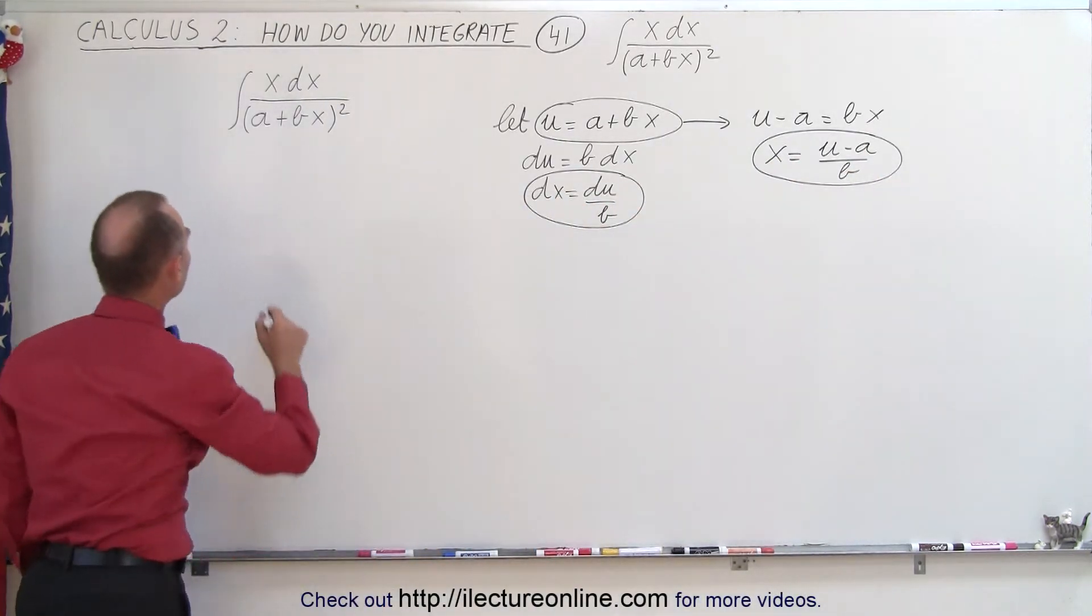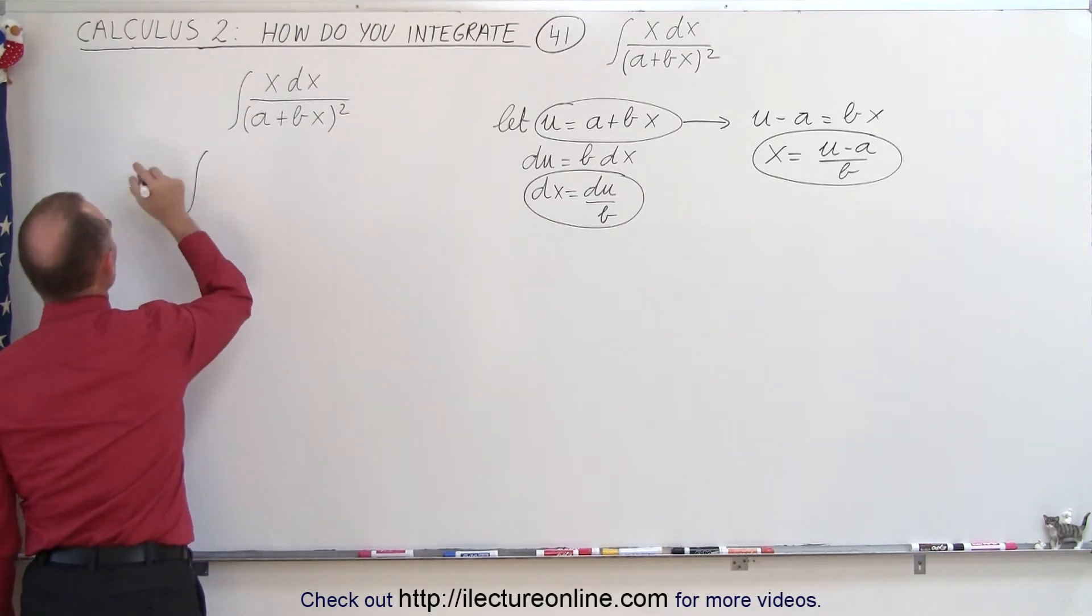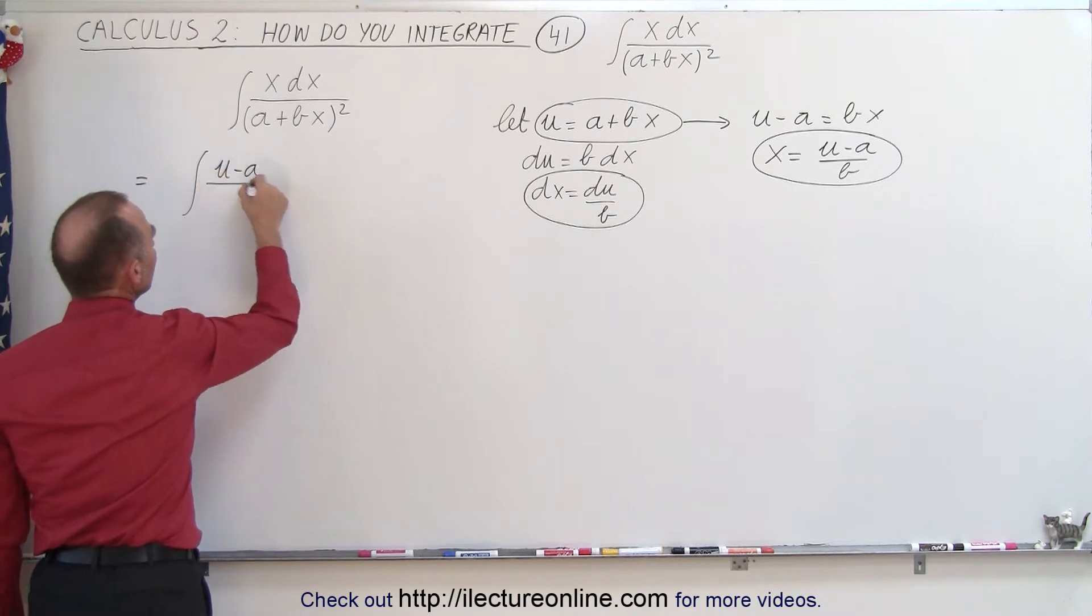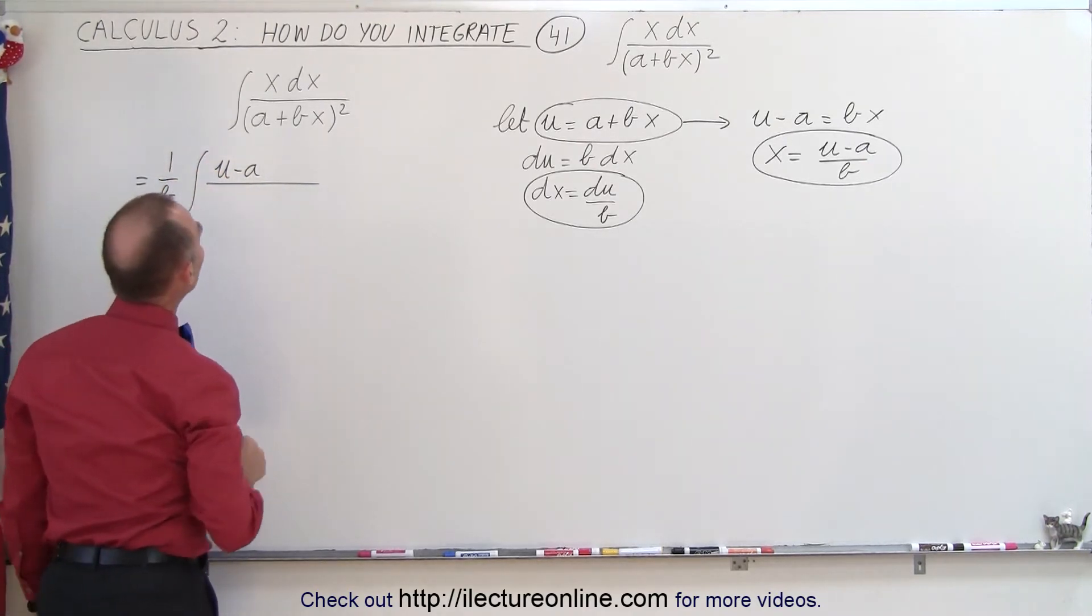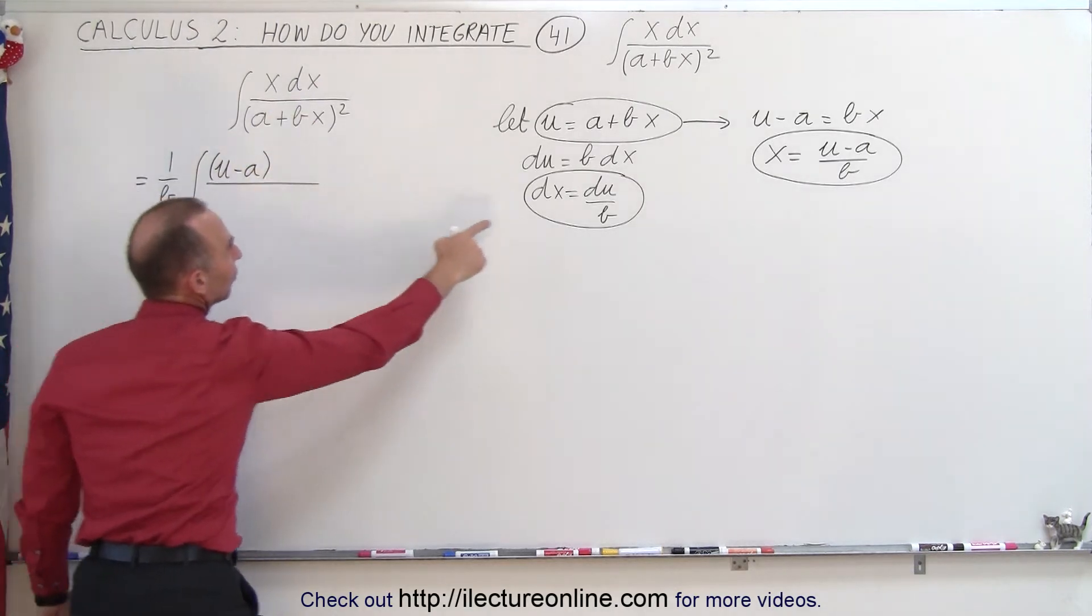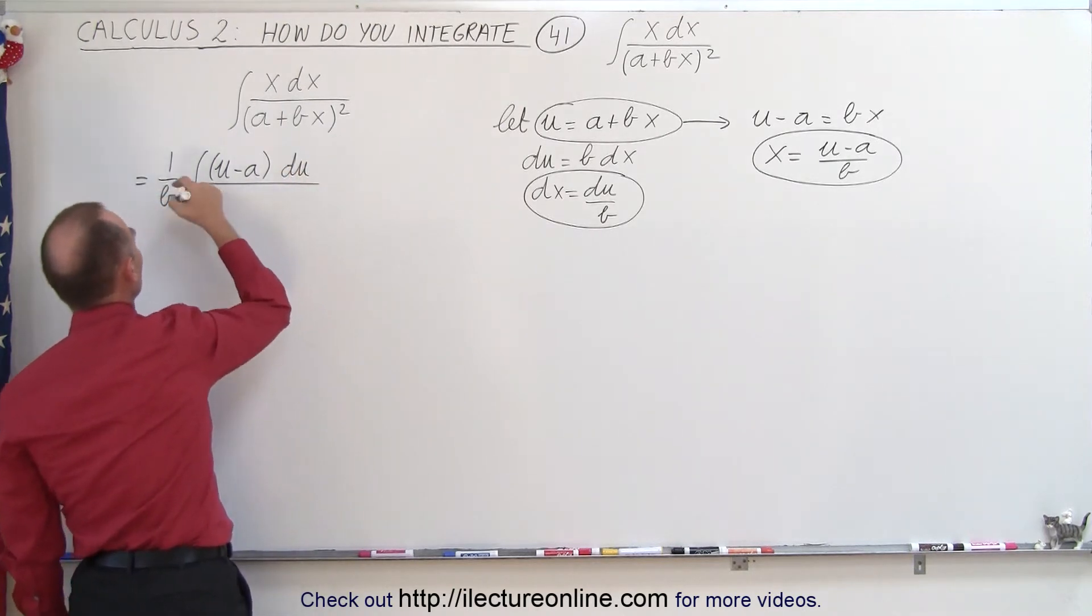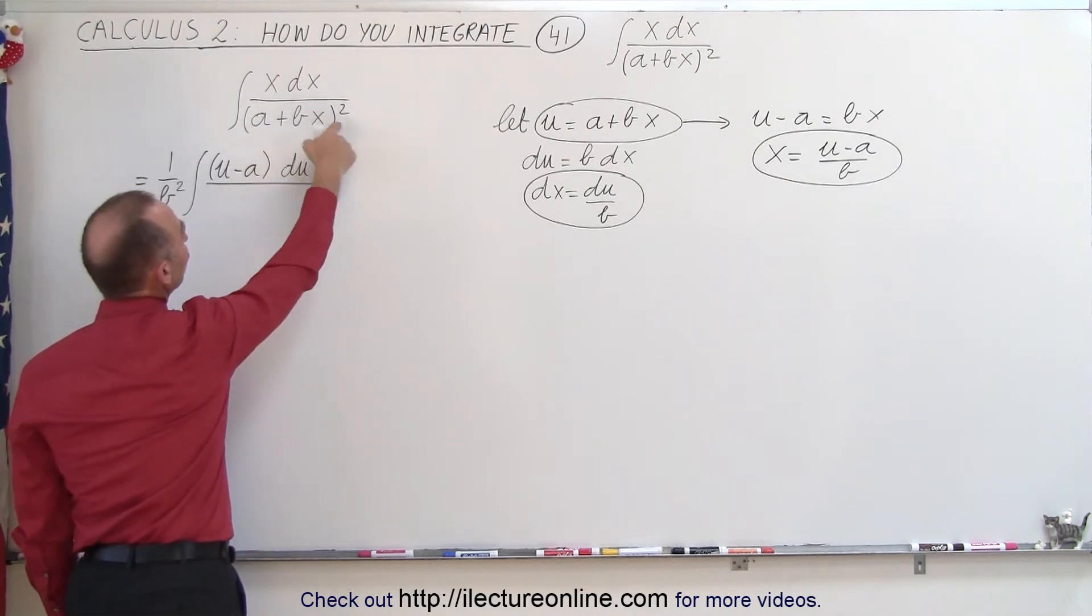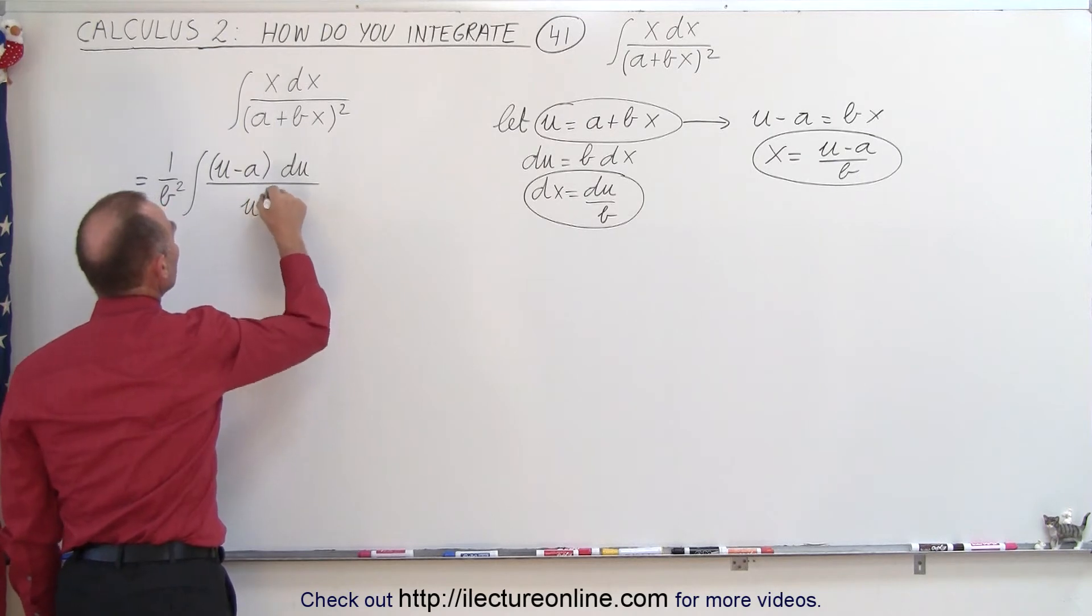Let's see what we get now. So this becomes equal to the integral of x which is u minus a divided by b, but instead of putting it here we'll put outside 1 over b and we still have a dx. Now that dx is going to be replaced by a du divided by b but instead of putting the b here we'll put it out here, make that b squared, and in the denominator we'll have a u squared because a plus bx is replaced by u so we end up with u squared du.